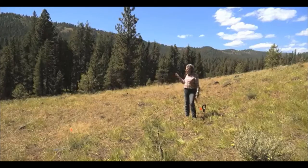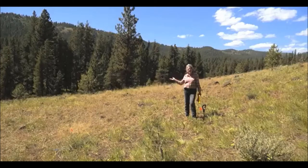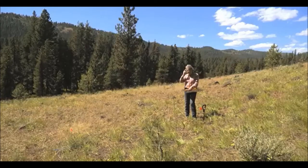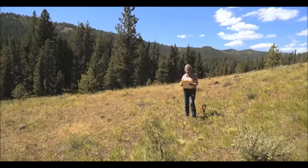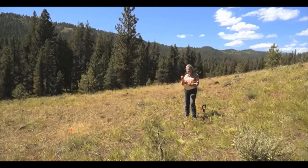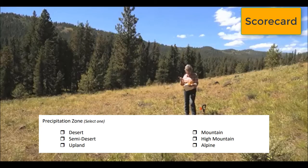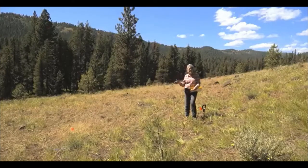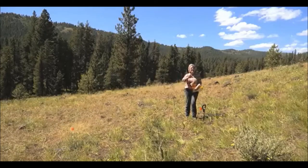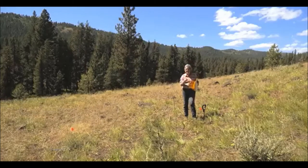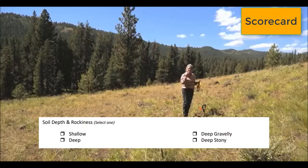So you've determined the depth and texture of the soil. The other thing you need to know is the climate — how much precipitation does this place get? Before you start the CDE, you need to know the precipitation categories: desert, semi-desert, upland, mountain, high mountain, or alpine. For example, an upland site gets 13 to 16 inches of precipitation. There'll be a sign showing how much precipitation is at the site, and you'll need to know which category it falls in.